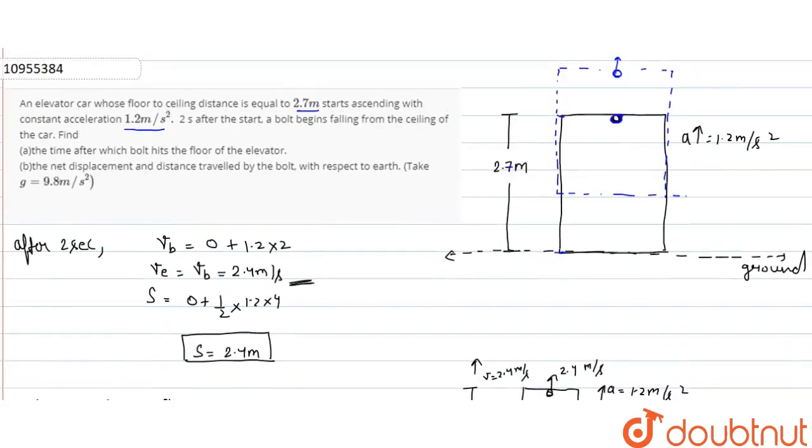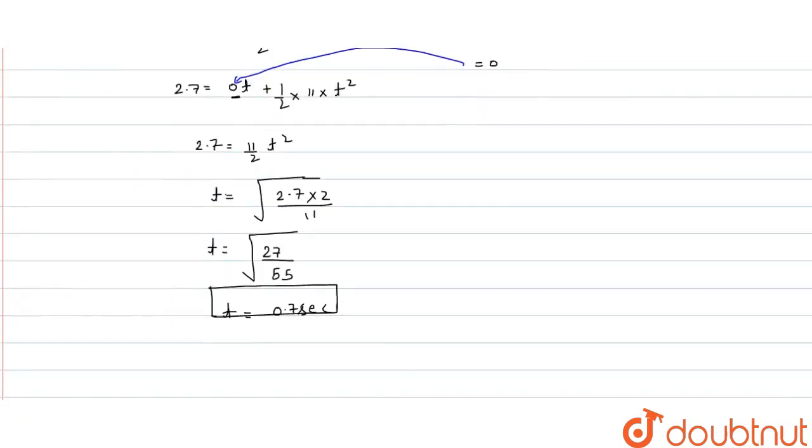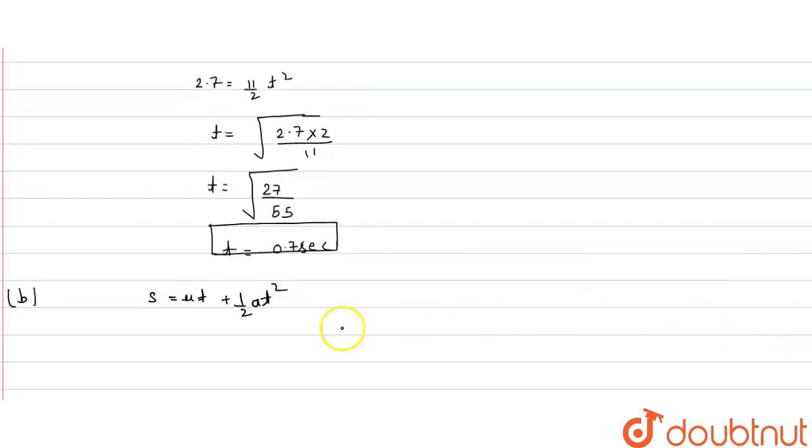Net displacement and distance traveled by the bolt with respect to earth. We have to start in part b. Total displacement will directly come from equation of motion s equals ut plus half at square. Acceleration we have to find, initial velocity with respect to ground is 2.4 meter per second.